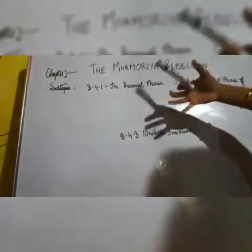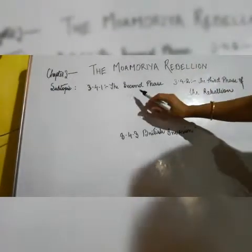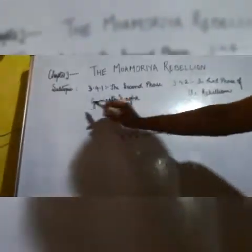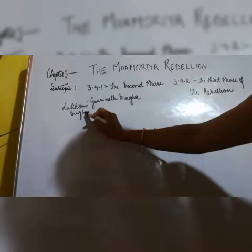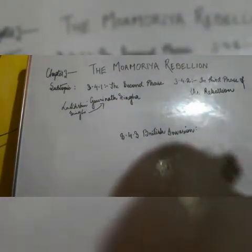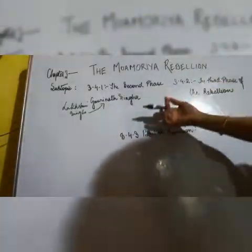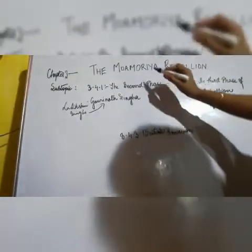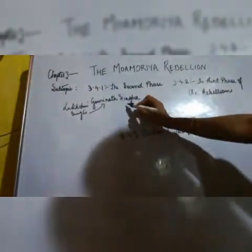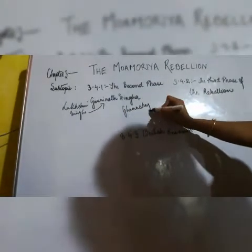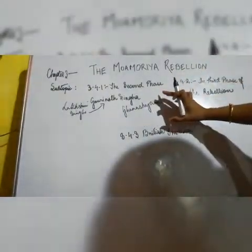In the second phase, the Moamorias still had the desire to take revenge. During the reign of Gaurinat Singha — who is the son of Lakshmi Singha — the Moamorias marched towards the Ahom capital. However, they could not successfully attack because Ghanashyam Buragohai, the minister of Gaurinat Singha, took some effective measures to stop them.